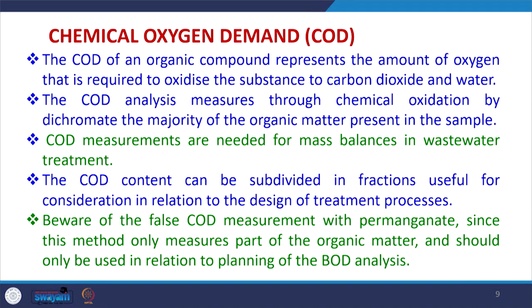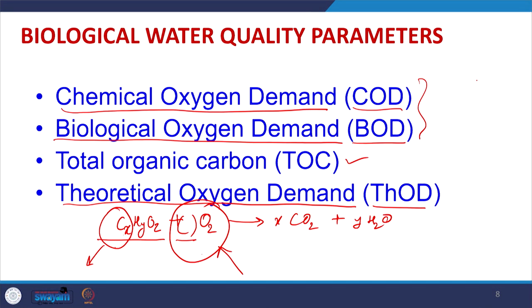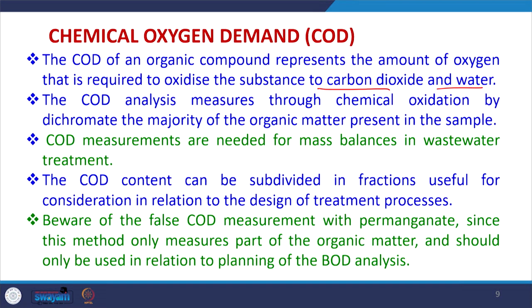The COD of an organic compound represents the amount of oxygen required to oxidize the substance to carbon dioxide and water. The difference between COD and BOD is that in BOD only microorganisms are involved in degradation, whereas in COD we use a highly oxidizing chemical to oxidize the compound to CO₂ and water. During COD analysis, chemical oxidation is measured by dichromate, which is a highly oxidizing compound, and the majority of organic matter in the sample will be oxidized.